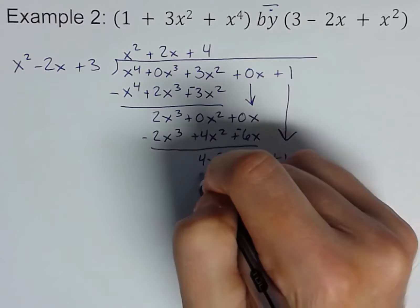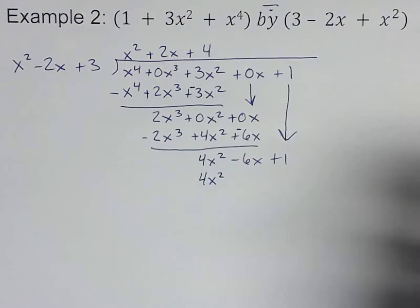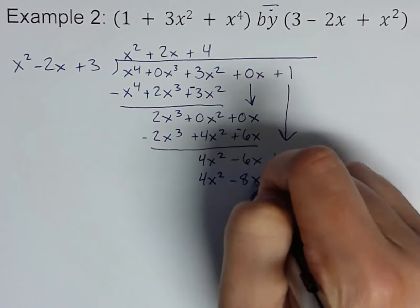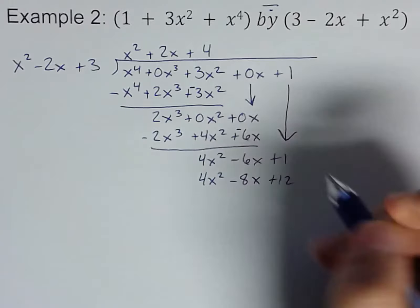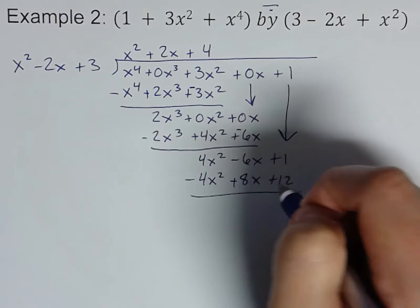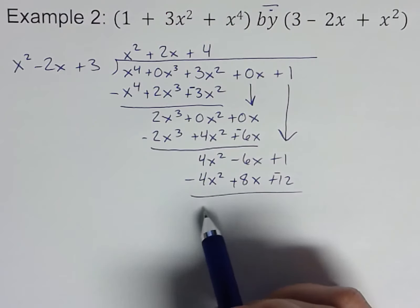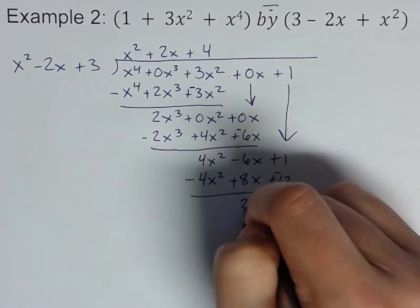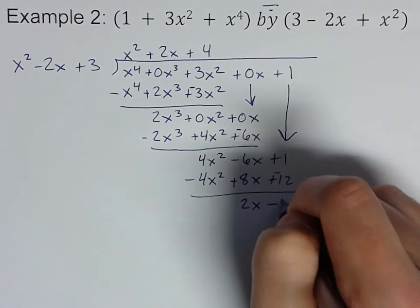And multiply 4 all the way through this. So 4x squared minus 8x plus 12. And subtract.